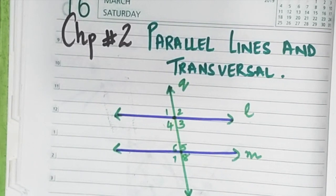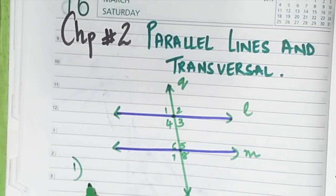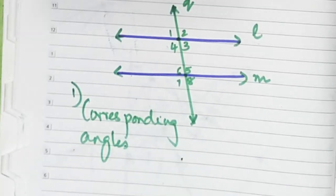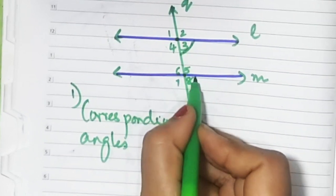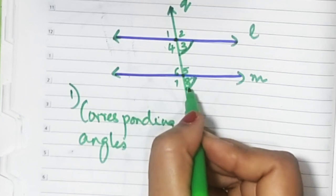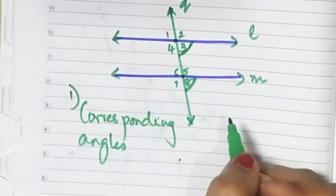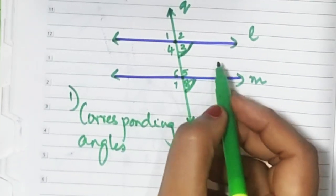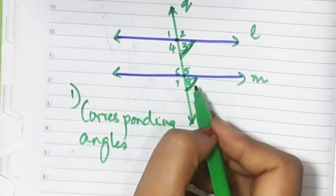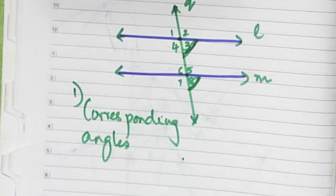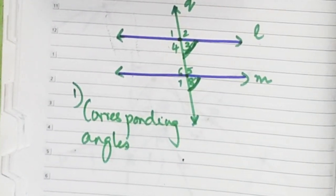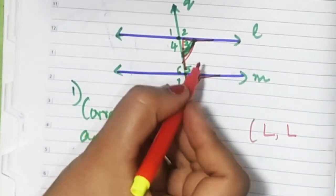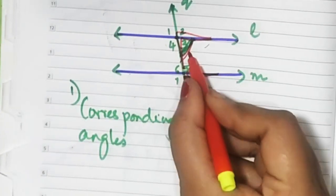There are three types of angles we are going to study in this chapter. The first type is corresponding angles. Angle three and angle eight, for example, are in the same direction and on the same side of the transversal — these are called corresponding angles. Remember the letter L: you can see an L formed here and another L here, so these are corresponding angles.